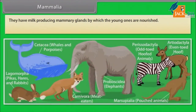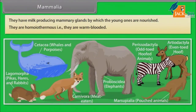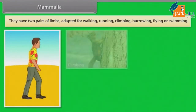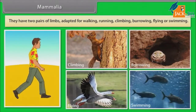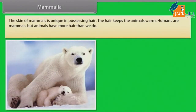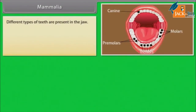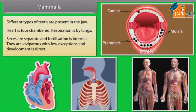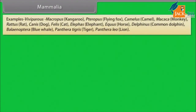Mammals have milk-producing mammary glands by which the young ones are nourished. They are homeothermous, that is, warm-blooded. They have two pairs of limbs adapted for walking, running, climbing, burrowing, flying or swimming. The skin of mammals is unique in possessing hair. External ears or pinnae are present. Different types of teeth are present in the jaw. Heart is four-chambered. Respiration is by lungs. Sexes are separate and fertilization is internal. They are viviparous with few exceptions and development is direct.